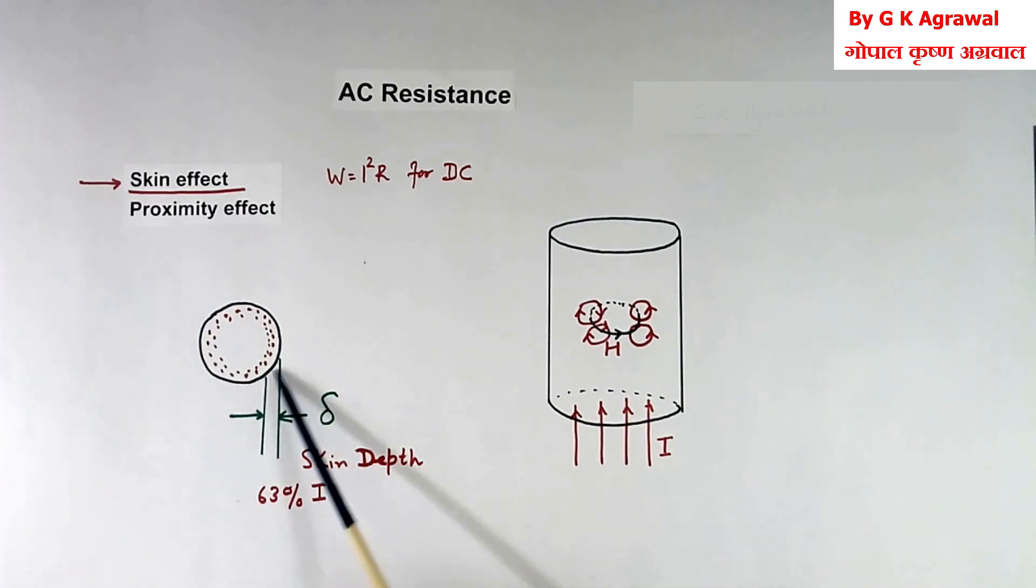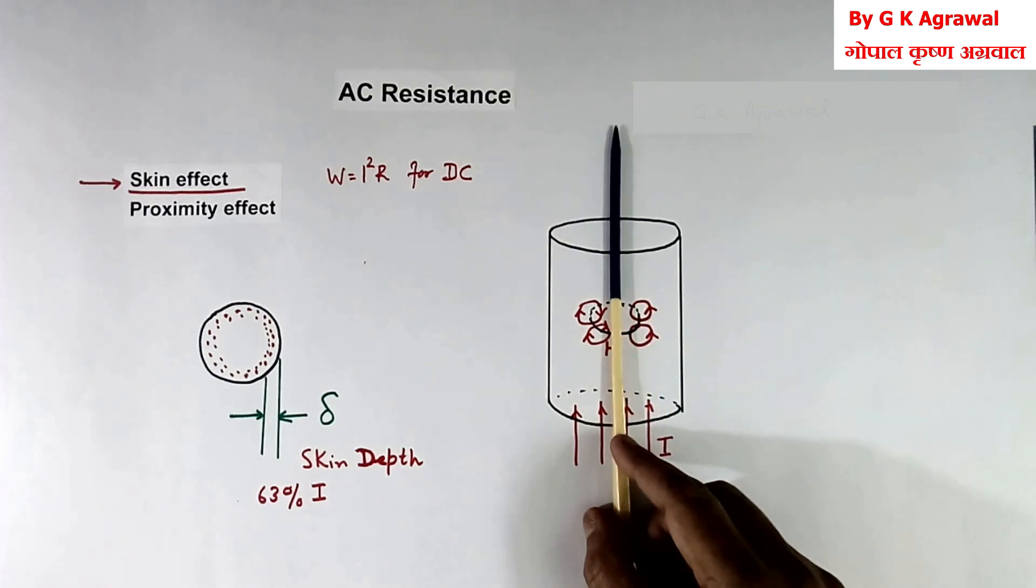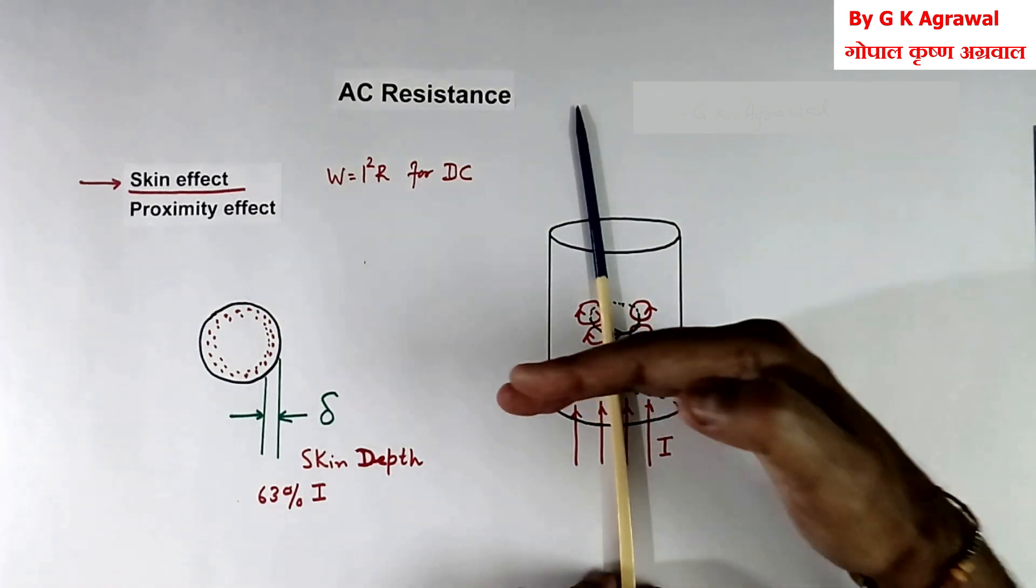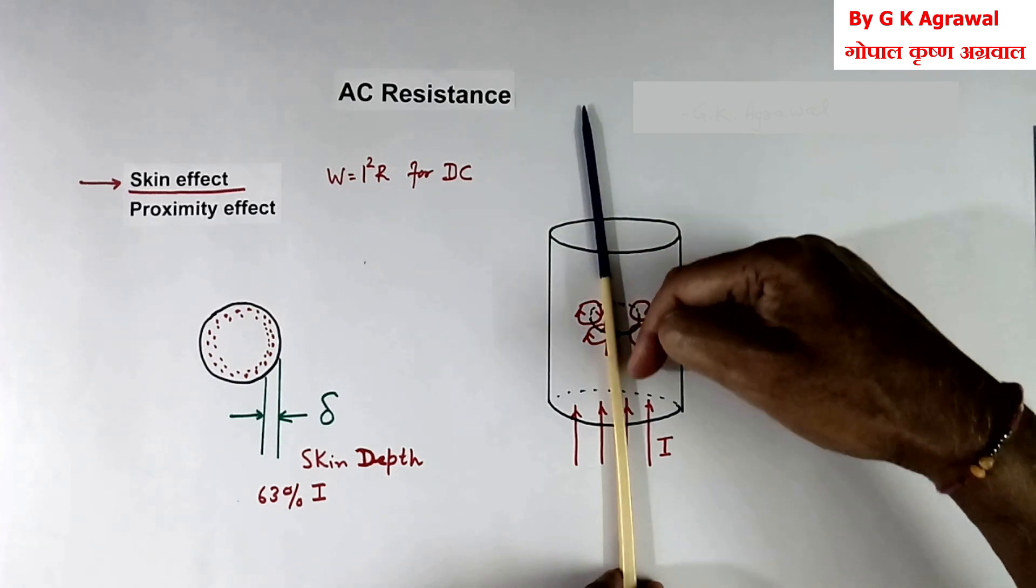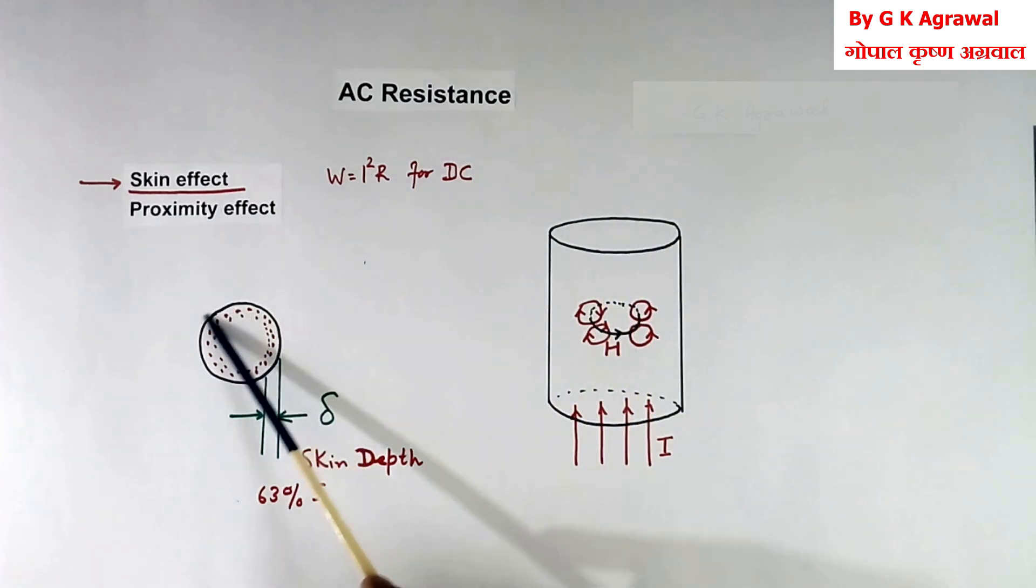This I have shown the cross section area of this wire. Suppose this is wire, we cut here, and from this side we see, we will see a circle. This circle is that.